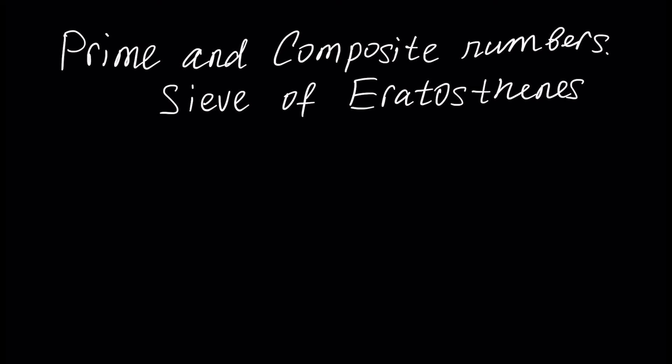In this tutorial, we are going to learn prime and composite numbers, and we will learn an ancient algorithm called the Sieve of Eratosthenes for finding prime numbers not bigger than any number n. Let's get started.